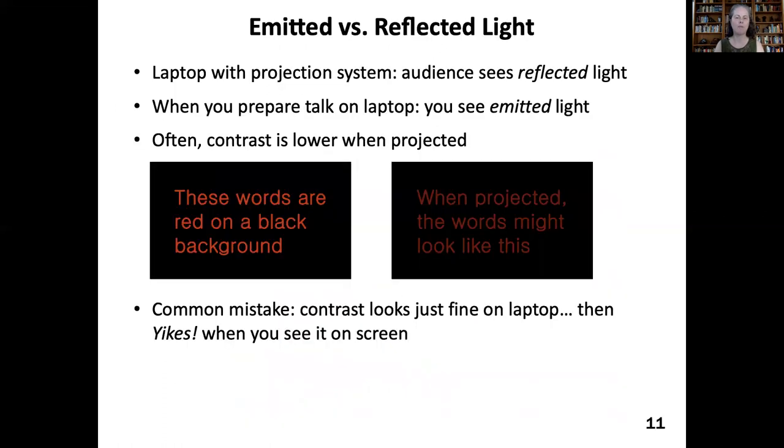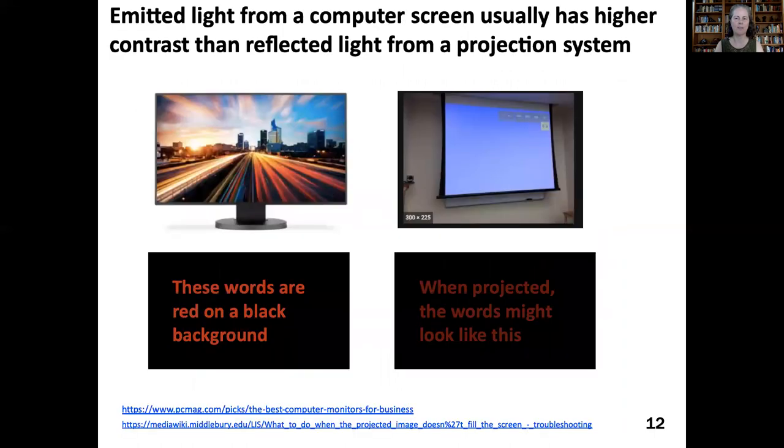Here's another example from the last lecture. Again, you can see that the title is just a general topic, not a message, and there's a bullet list with a lot of words. So we can redesign the slide like this. The title is now an assertion. Emitted light from a computer screen usually has higher contrast than reflected light from a projection system. That is the main point, which I was trying to get across with that slide. So I make that main point the title. And the rest is visual, no bullet list. It puts a bit more of a burden on me as a speaker to remember what I was going to say about the slide. But still, the pictures cue me pretty well.